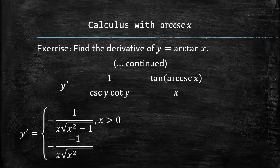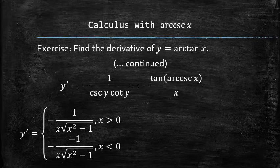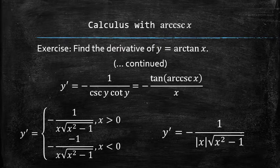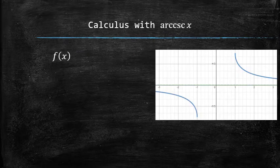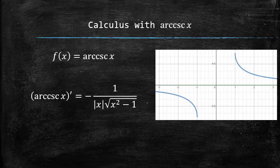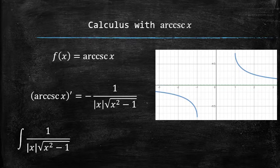However, this can be elegantly written as a single formula using the absolute value notation. In summary, we now have the formula for the derivative of arccosecant function as well as the formula for the antiderivative of its derivative.